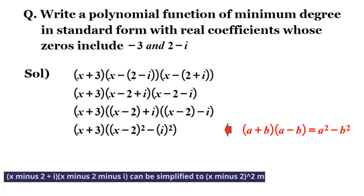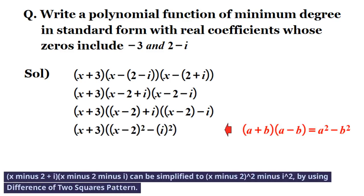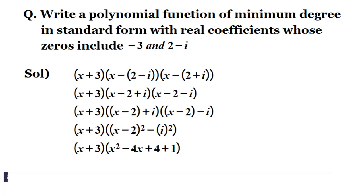(x minus (2 plus i))(x minus (2 minus i)) can be simplified to (x minus 2) squared minus i squared, by using difference of two squares pattern, and substitute negative 1 for i squared.